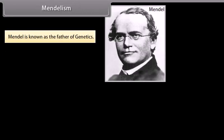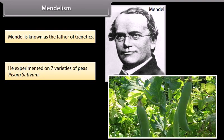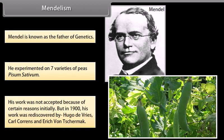Mendelism. Mendel is known as the father of genetics. He experimented on seven varieties of peas, Pisum sativum. His work was not accepted initially, but in 1900 his work was rediscovered by Hugo de Vries, Karl Correns, and Erich von Tschermak.